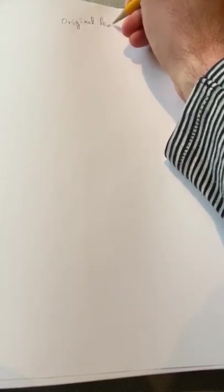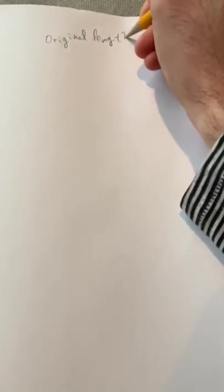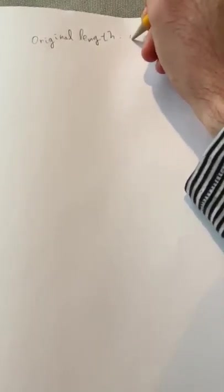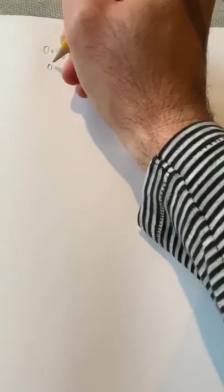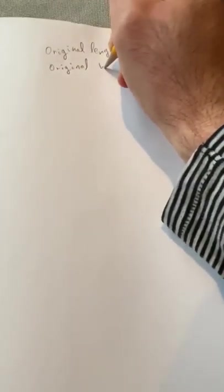So this problem starts out by telling you they have a garden that's originally five feet by four feet, so you can write those quantities down. So the original length is going to be five feet and the original width is going to be four feet.